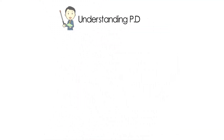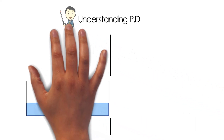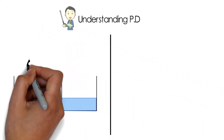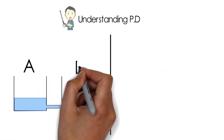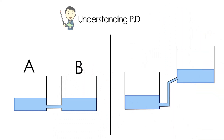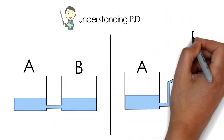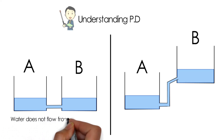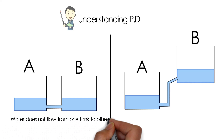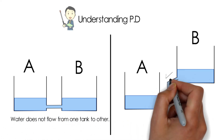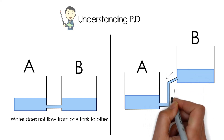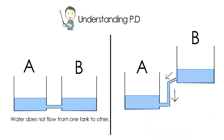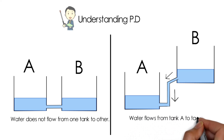Let us understand potential difference with another example. Consider two scenarios with two tanks, tank A and tank B, with equal volumes of water. On the left, water does not flow from one tank to the other because they are at equal levels. On the right, tank B is raised up and has gained more potential energy, so water from tank B flows towards tank A until both tanks reach the same water level.